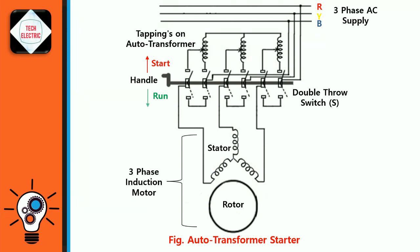When the motor picks up the speed of about 80% of its rated value, the handle H is quickly moved to the run position. Thus, the Auto Transformer is disconnected from the circuit, and the motor is directly connected to the line and achieves its full rated voltage.